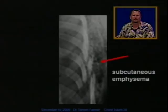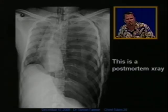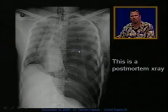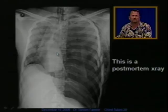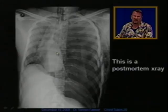Subcutaneous emphysema is not lethal. The rib fractures are not lethal unless they cause a tension pneumothorax. This is a post-mortem X-ray from the American College of Surgeons trauma web page. This tension pneumothorax is lethal because it's compressed on the heart — the heart is not able to fill with blood, so the heart can't pump. And that's lethal.